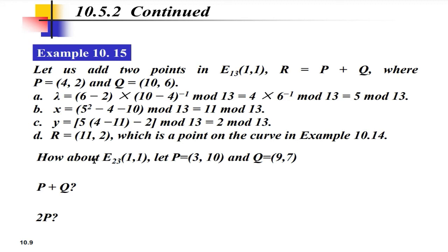Now here is your task: for elliptic curve E₂₃(1,1) with modulus 23, a = 1, b = 1, and points P = (3, 10) and Q = (9, 7), calculate P + Q and also the point doubling 2P = P + P. Using the formulas discussed, you can easily calculate this. That's all about elliptic curve cryptography.